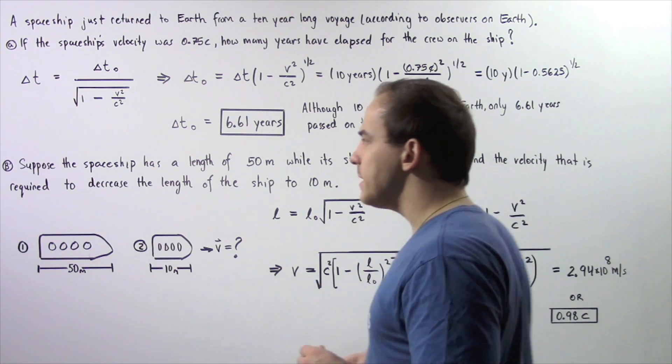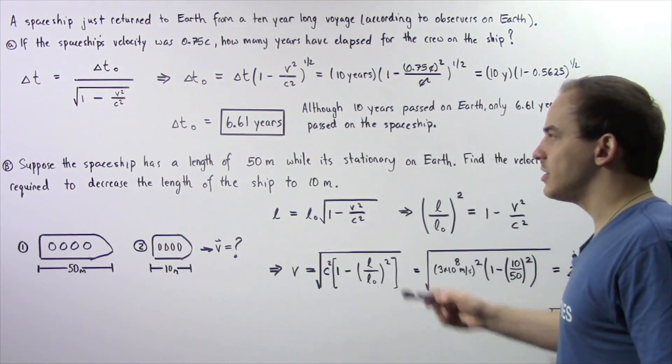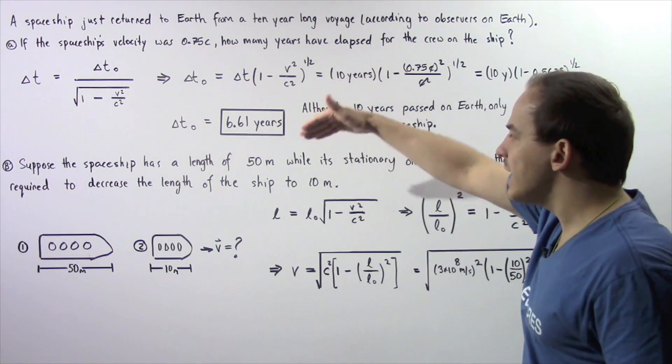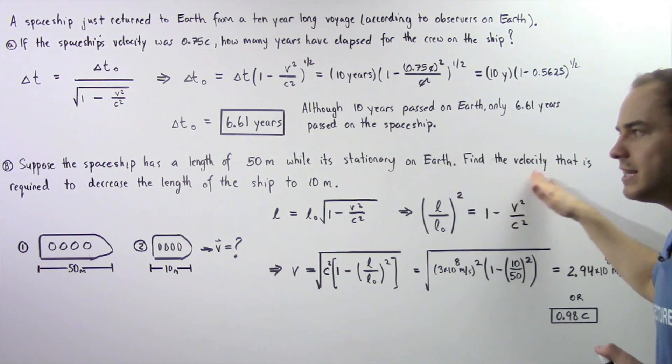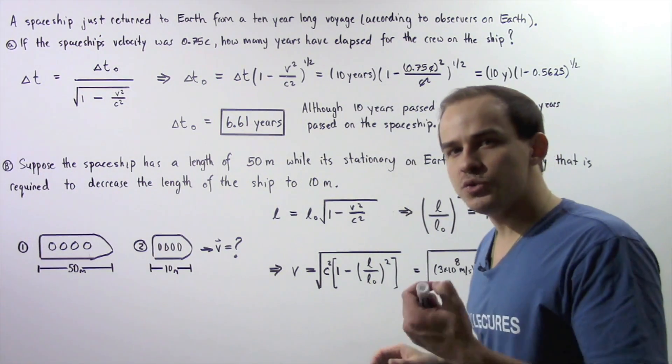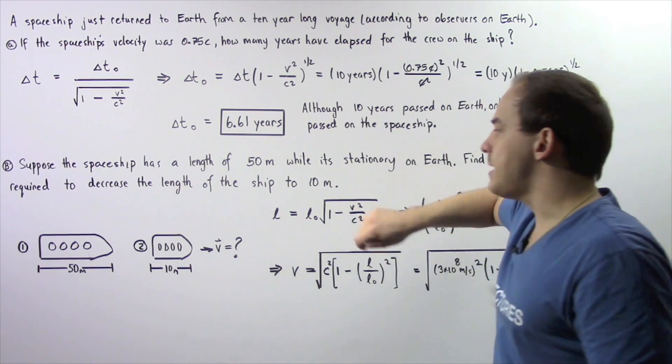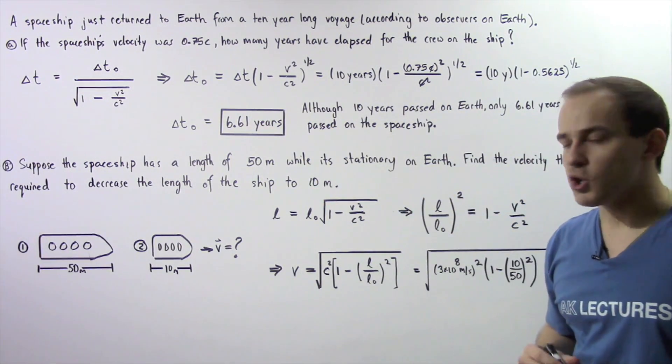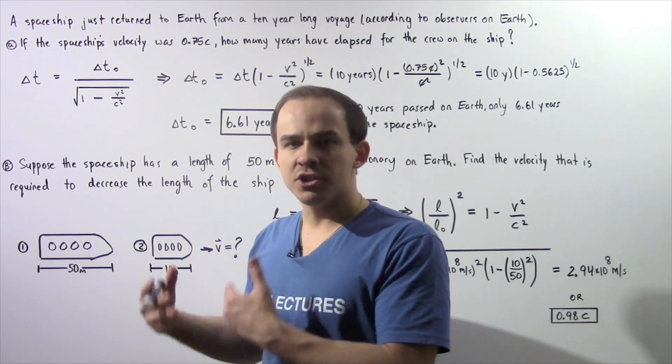Now let's move on to part B. Suppose that the spaceship has a length of 50 meters while it's stationary on Earth. We want to find the velocity that is required to decrease the length of that ship from 50 meters to 10 meters. We want to take into consideration length contraction.